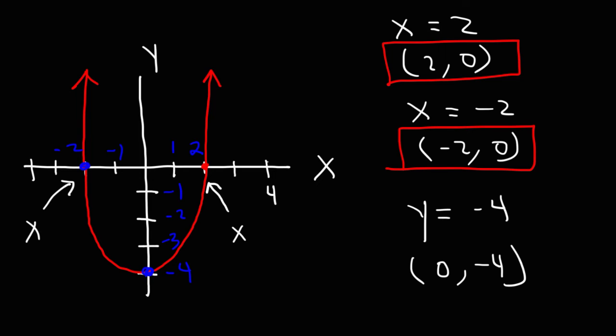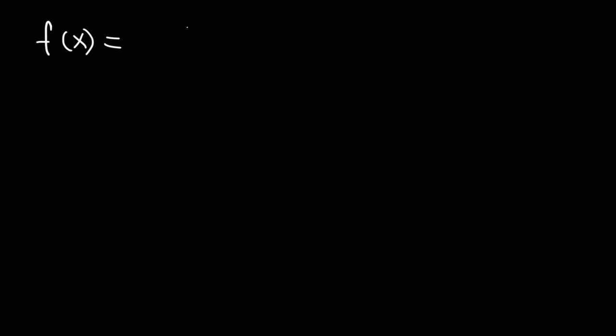So now you know how to find the x and y-intercepts from a graph. Now what about finding the x and y-intercepts of a function? Let's say we have a quadratic function f(x) equals x squared minus 8x plus 12. Go ahead and find the x and y-intercepts of this function.